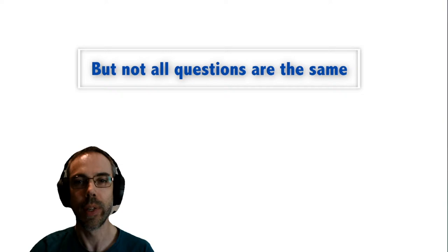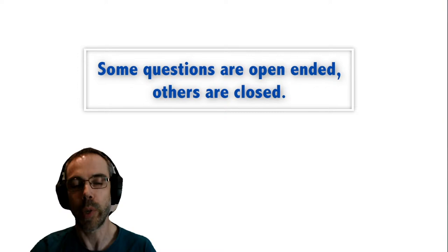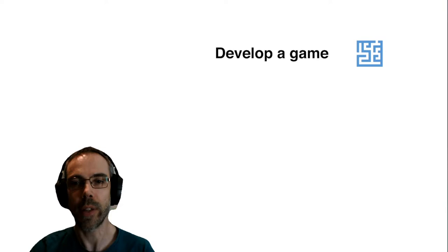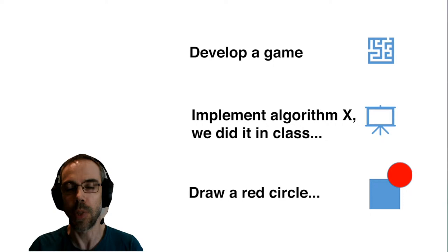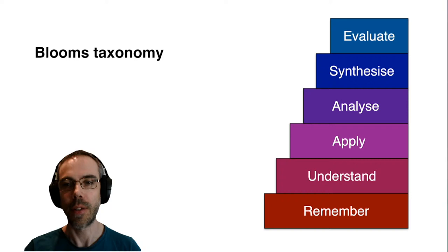We can think about this in terms of Bloom's taxonomy. Activities such as remember and understand can be addressed by closed questions, whereas analyze, synthesize and evaluate at the top can be addressed by more open-ended questions. For some questions, students need planning and critical thinking — implementing a line drawing algorithm requires thinking about moving along the x-axis and calculating y = mx + c. For more open-ended questions like developing a maze game, there are many more design decisions requiring much more planning.